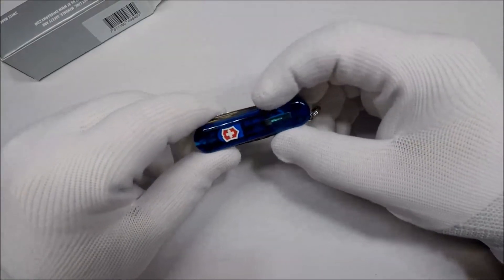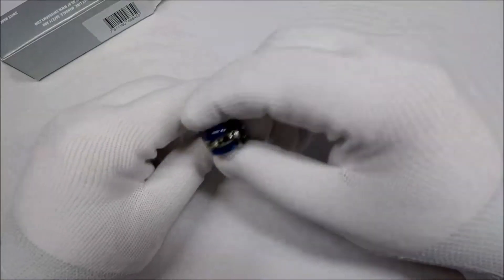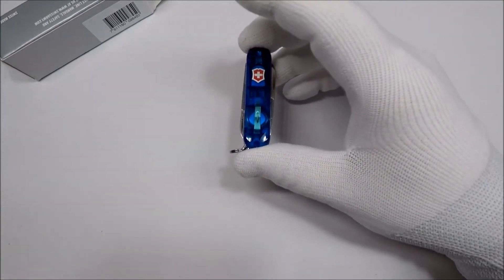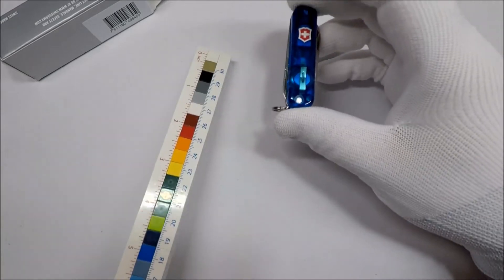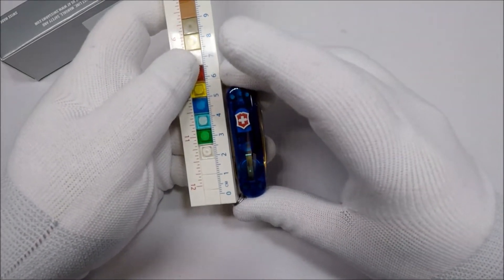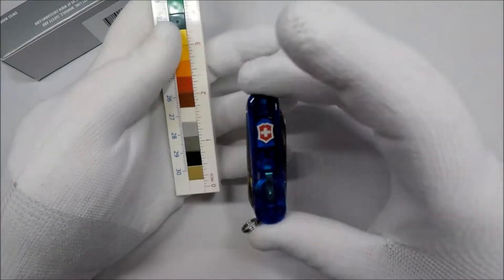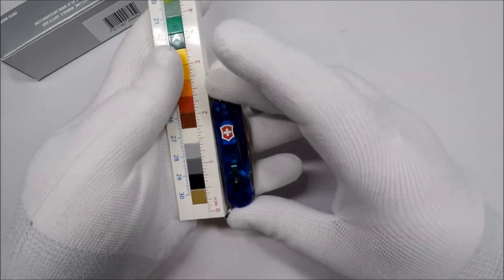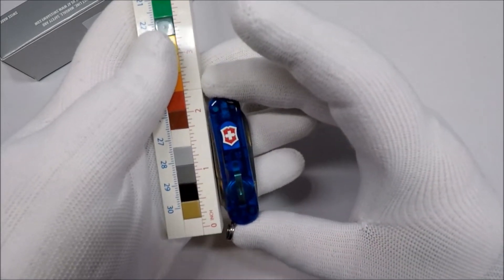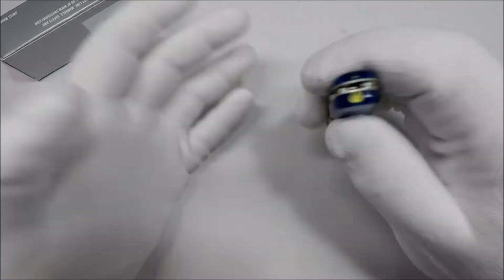Now, the big selling point for the Signature Light is one, it weighs 0.8 ounces. And it's 58 millimeters, it's one of the 58 millimeter ones. For those of you not metricked up, it's just a hair over 2 inches.